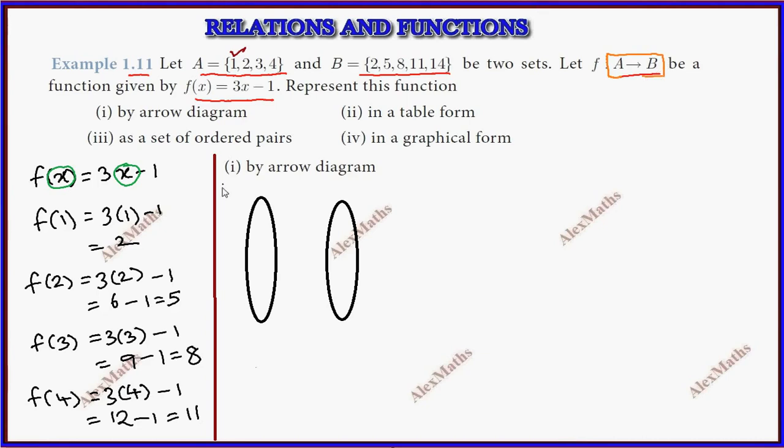A to B. So, the A elements: 1, 2, 3, 4. Here we have 2, 5, 8, 11, 14. Now we have to make the substitution. 1 goes to 2, 2 goes to 5, 3 goes to 8, 4 goes to 11. This is our function.